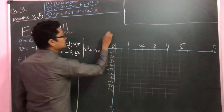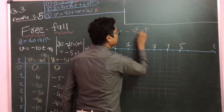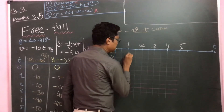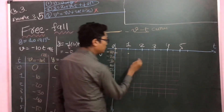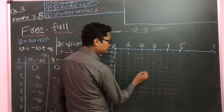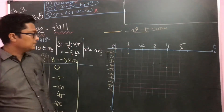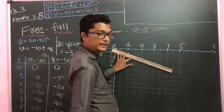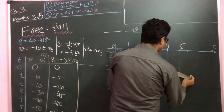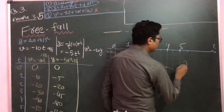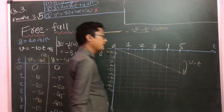Plotting the velocity-time graph: the first point is at (0,0). Then at t=1, v=-10; t=2, v=-20; t=3, v=-30; t=4, v=-40; t=5, v=-50. Joining these points gives a straight line going downward, which can be extended further and further.